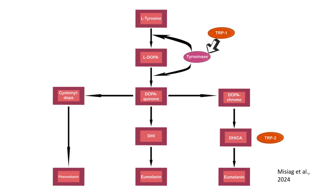In the absence of cysteine, dopaquinone is converted into dopachrome, which undergoes further modifications to form DHI and DHICA. TRP2 catalyzes the tautomerization of dopachrome into DHICA, while TRP1 oxidizes DHICA. These reactions stabilize the pathway and increase the production of eumelanin, the darker and more protective form of melanin.